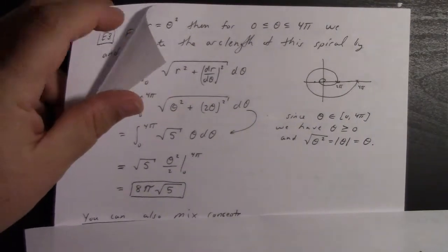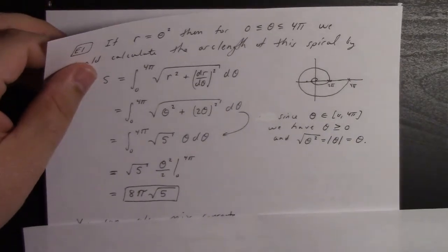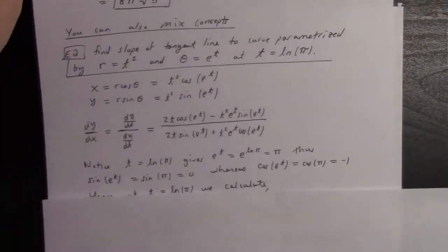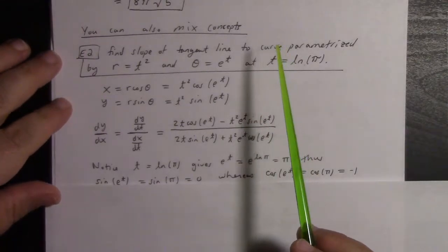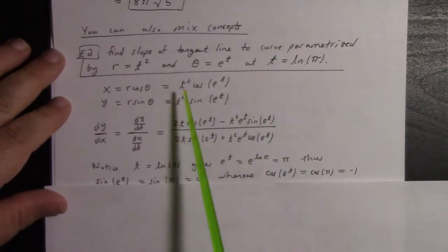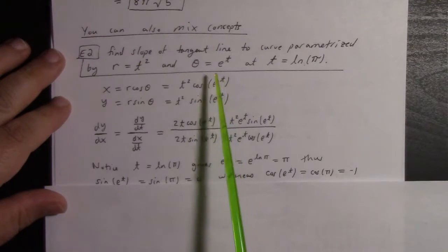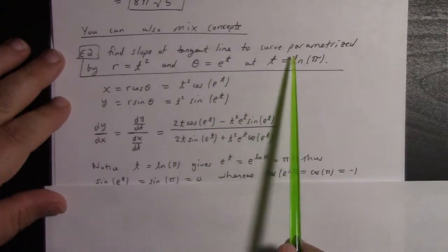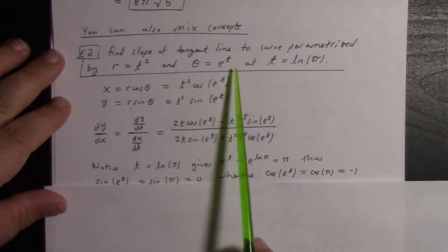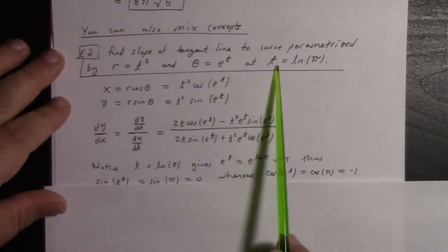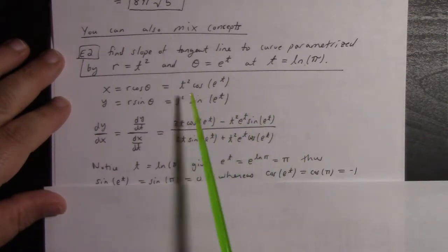Usually, if you try these arc length formulas in the wild, you'll get something you can't actually integrate. But that one worked out pretty nice. I should mention, you can also mix and match concepts. We could look at a parametrization of a polar curve, like r = t² and θ = e^t, and say, find the slope of the tangent line at t = ln(π).